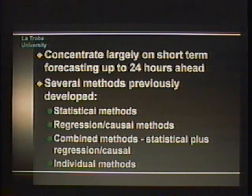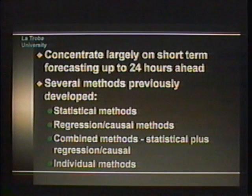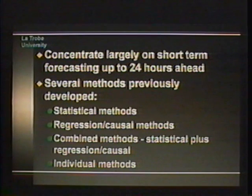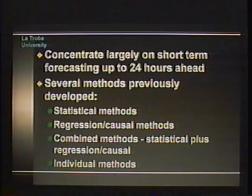These problems have been previously tackled using a variety of methods before one considered the use of neural networks. We find four classes of methods. The first is statistical methods, where we look at a time series from the past and predict an extrapolation into the time horizon of interest. Techniques in this category include orthogonal function techniques, spectral expansion techniques, and Box-Jenkins methods.